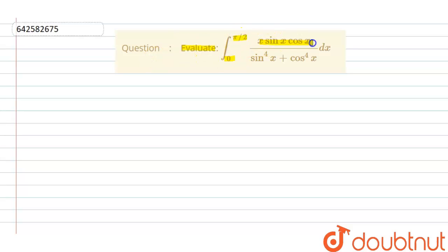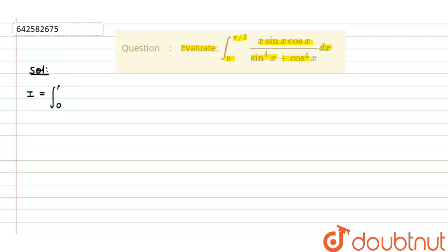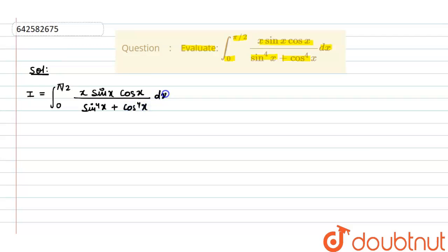The question is: evaluate the limit from 0 to π/2 of x·sin(x)·cos(x) divided by sin⁴(x) + cos⁴(x) dx. According to the question, we let I equal the integral from 0 to π/2 of x·sin(x)·cos(x) divided by sin⁴(x) + cos⁴(x) dx.